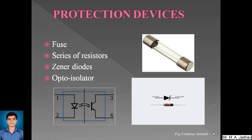Moving to protection devices: the first is a fuse — a pictorial representation is shown. What a fuse does is, when the voltage goes beyond the rated voltage of any equipment, the fuse element melts, the contact between the two terminals opens, and the load connected to the circuit is protected from getting damaged. That is the work of a fuse.